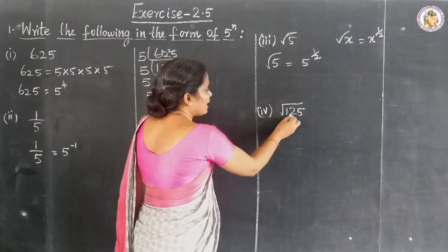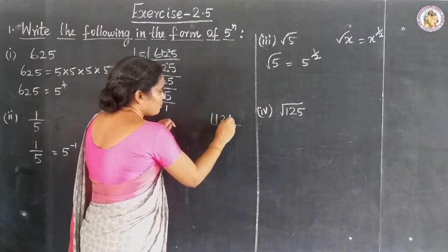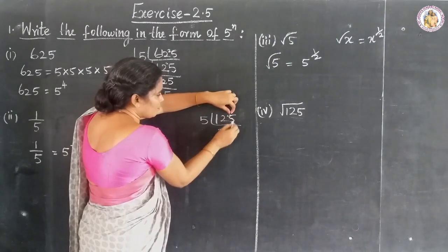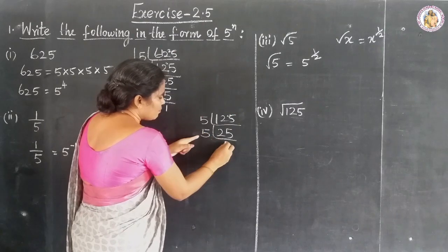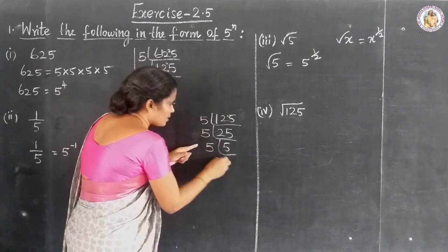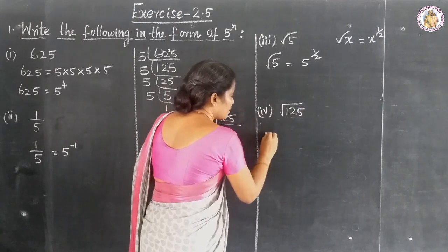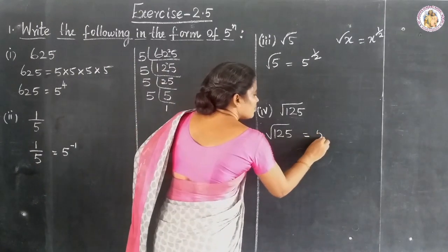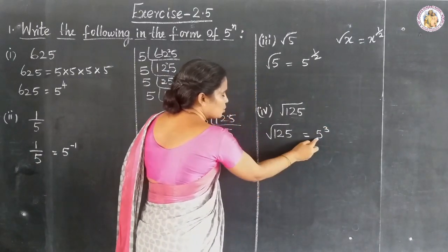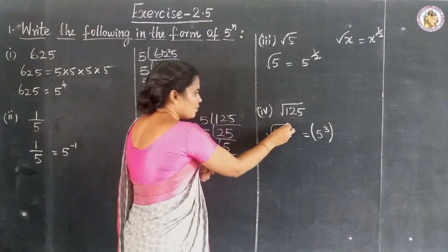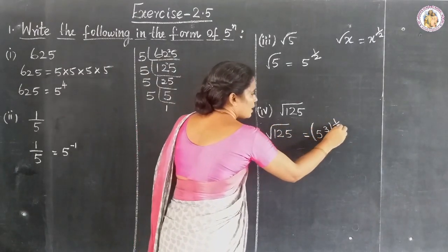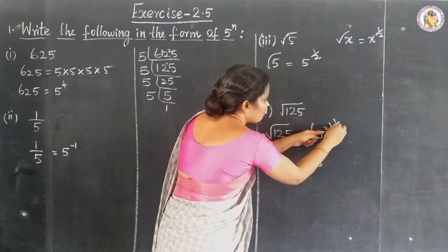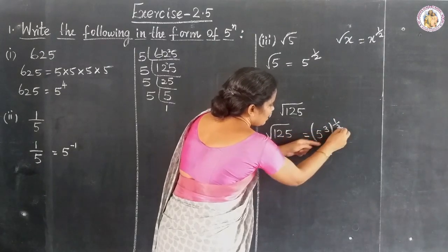Question number 4: the square root of 125. Finding factors of 125 — last digit is 5, so 125 equals 5 × 5 × 5, giving 5 to the power of 3. Within the bracket for square root we take the power as 1 by 2. Multiplying: 3 into 1 by 2 equals 3 by 2. So the square root of 125 equals 5 to the power of 3 by 2.